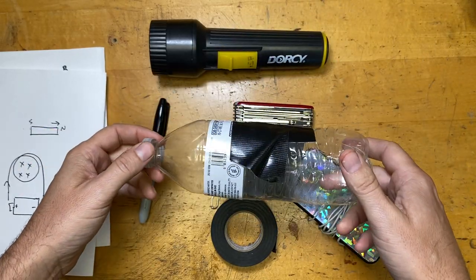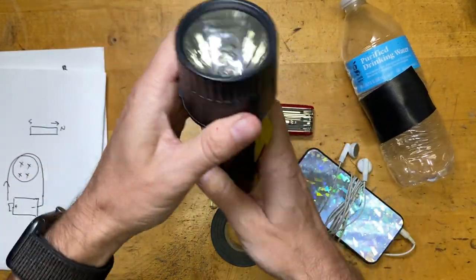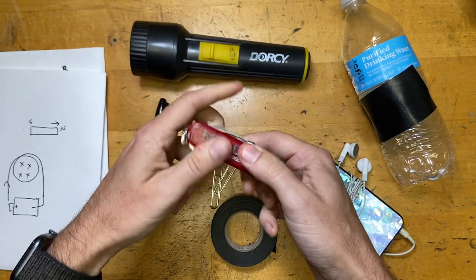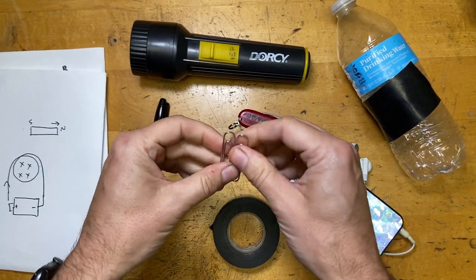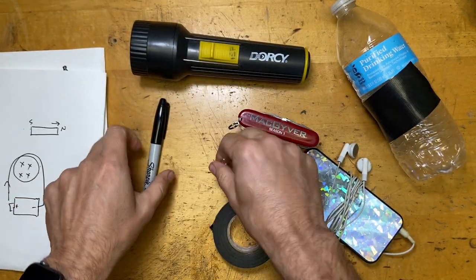So I have an empty water bottle, I have this terrible old flashlight, I have my Swiss Army knife, I have some electric tape which I don't really need, and I have some paper clips. Of course, this is the key, paper clips, right? We always want to use paper clips.